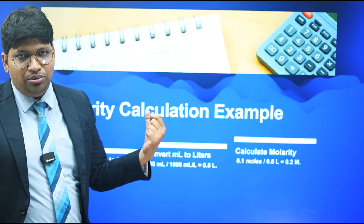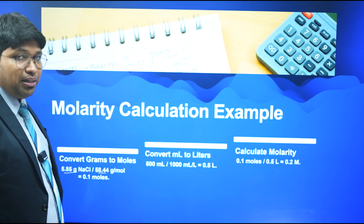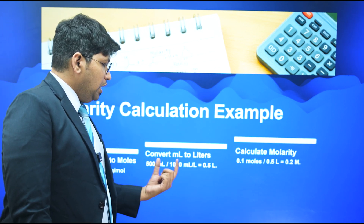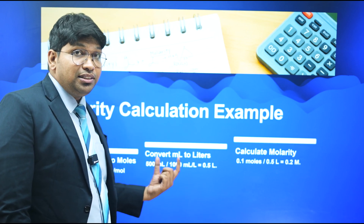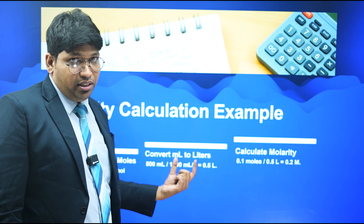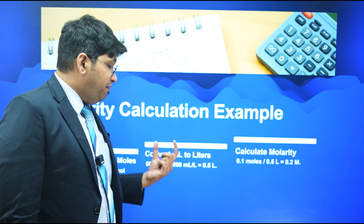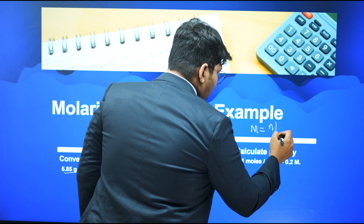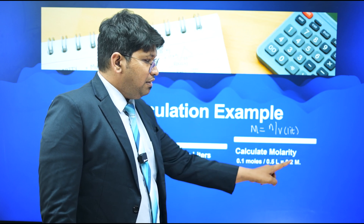To calculate molarity: given mass divided by molar mass gives number of moles. Unit conversions are very crucial — be careful whether you take volume in mL or liters. Here, for example, 500 mL equals 0.5 liters. Using M = n / V (in liters), if n = 0.1 moles and V = 0.5 L, then M = 0.2 M.